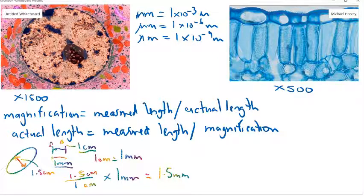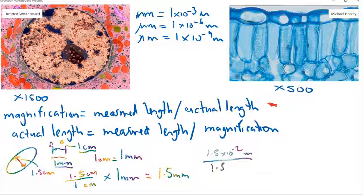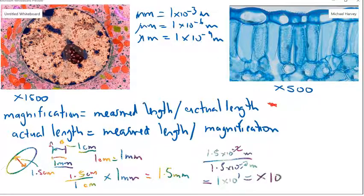You can also work out the magnification using this first equation. The magnification is going to be equal to the measured length, which is 1.5×10⁻² meters, divided by the actual length, which is 1.5×10⁻³ meters. Notice I've changed to standard form. That cancels out, so it's going to be 1×10¹, or 10 times magnification.